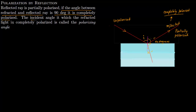The incident angle at which the reflected light is completely polarized is called the polarizing angle. We denote this incident angle as theta_p. When light is incident at theta_p, the angle between the reflected and refracted ray is 90 degrees, and we call theta_p the polarizing angle.